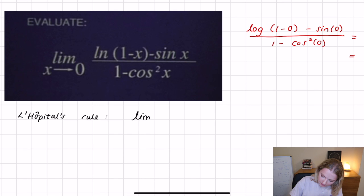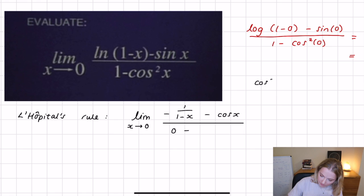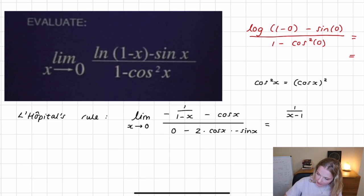We have the limit as x tends towards zero. We take the derivative of the natural log of one minus x, which gives us minus one over one minus x, minus the differential of sine x, which is cosine x. For the denominator, the derivative of one is zero, and writing cosine squared using the chain rule gives us two times cosine x times the differential of cosine x, which is minus sine x. So that gives us one over one minus x, minus cosine x, all over two cosine x sine x.